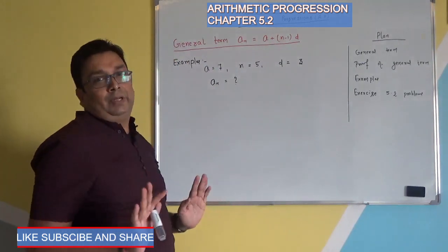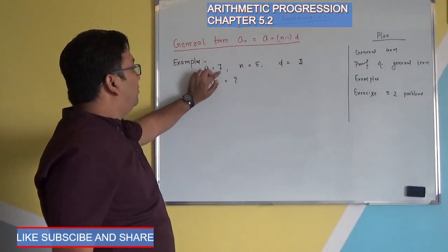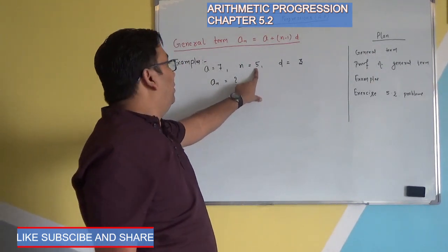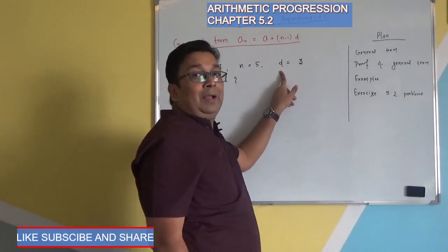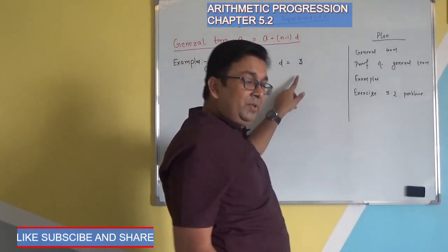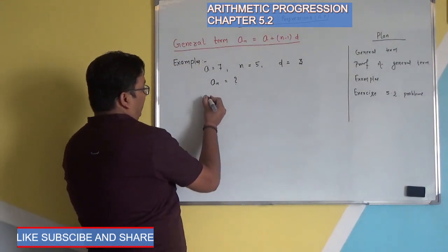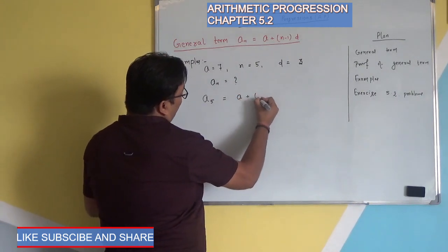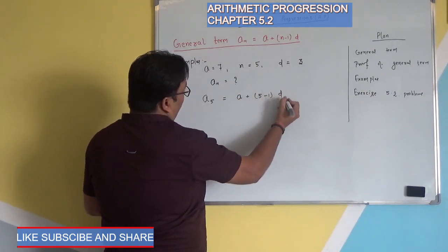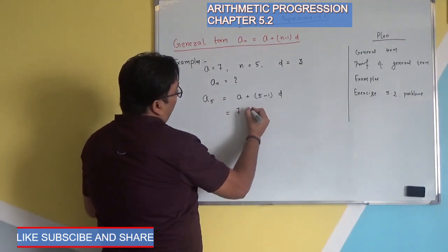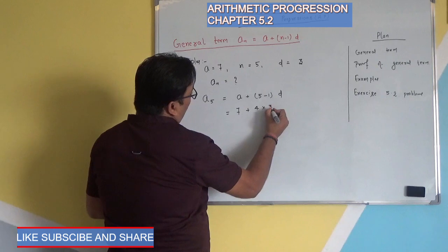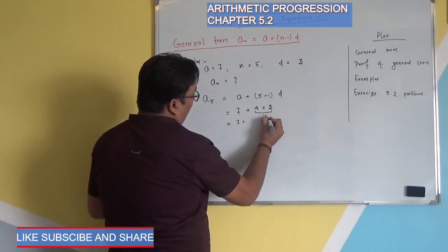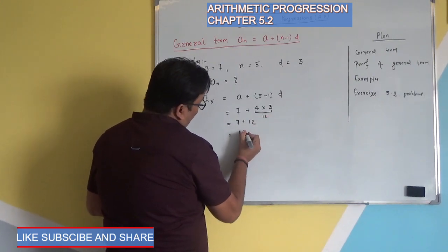First, let's take a basic example. Our first term is given as 7. Our n, meaning the nth term, is the fifth term. Our common difference is given as 3. So to find a₅: a₅ equals a plus 5 minus 1 into d, that means 7 plus 4 and d's value is 3.